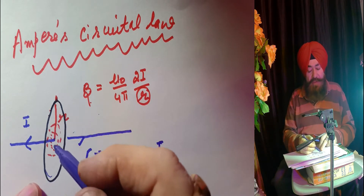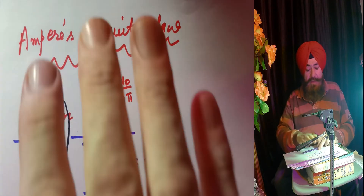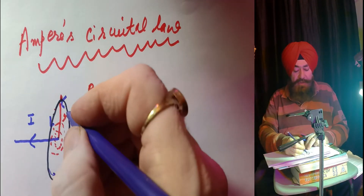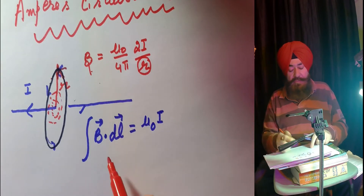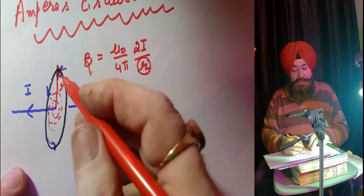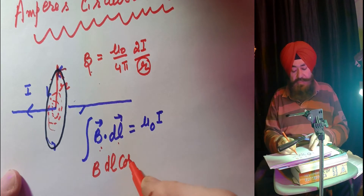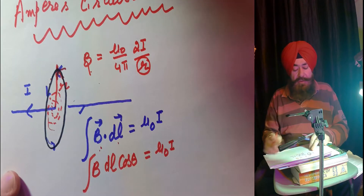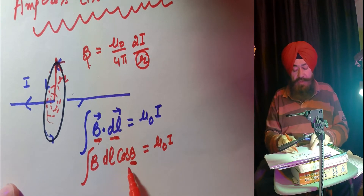You can find the direction of the magnetic field by using the right-hand thumb rule. Point the thumb along the current direction and curl your fingers — that gives the field direction. So B and dl along this circular loop are in the same direction. If I open the dot product, it is B·dl·cosθ, integrated for the whole loop. Because B and dl are along the same direction, θ equals zero, and cos0 is one.